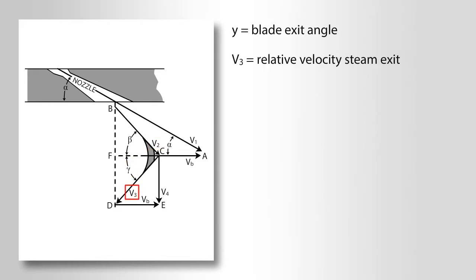Gamma equals blade exit angle. V3 equals relative velocity steam exit. VB equals blade velocity. And V4 equals absolute velocity steam exit.